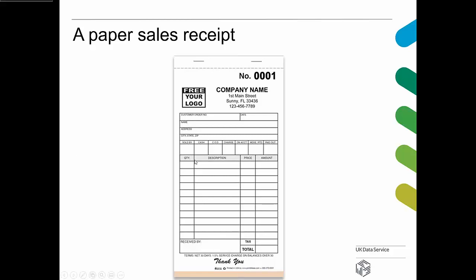Here's an example of a paper sales receipt, which I found on the internet. You can imagine this being commonly used pre-computer days in department stores where someone was buying something. You needed information about the customer — order number, name, address — information about how they paid, such as cash, cash on delivery, or charge on account. The main body of the form shows what they bought, how many, and how much they paid, followed by the total amount received.